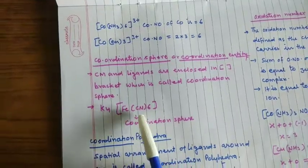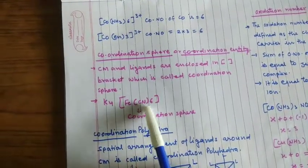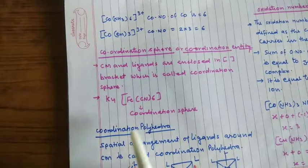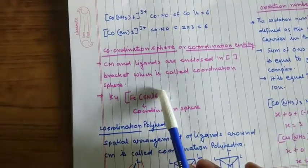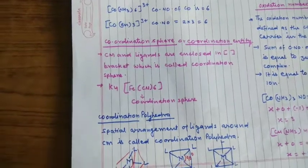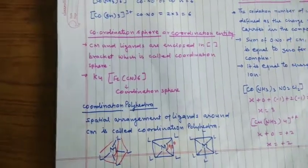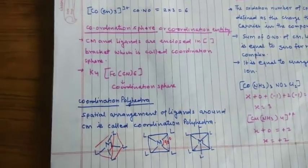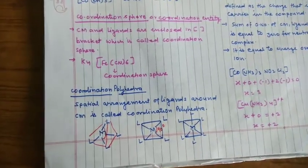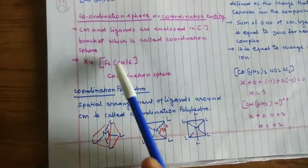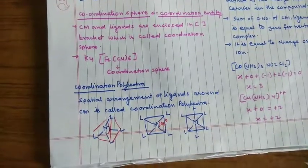Metal के बाद surrounding species होंगी जो कि negative ion और neutral molecule हो सकता है। तो इस तरह से जो चीजें हमारा square bracket के अंदर लिखी हुई हैं जिसमें basically जिसमें mainly central metal atom होगा और surrounding species ligand होंगी negative ion या neutral molecule होंगी, इसको coordination sphere बोलता है।